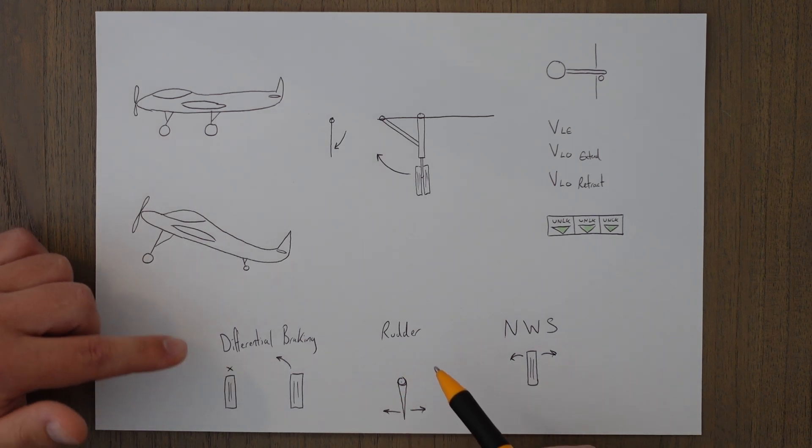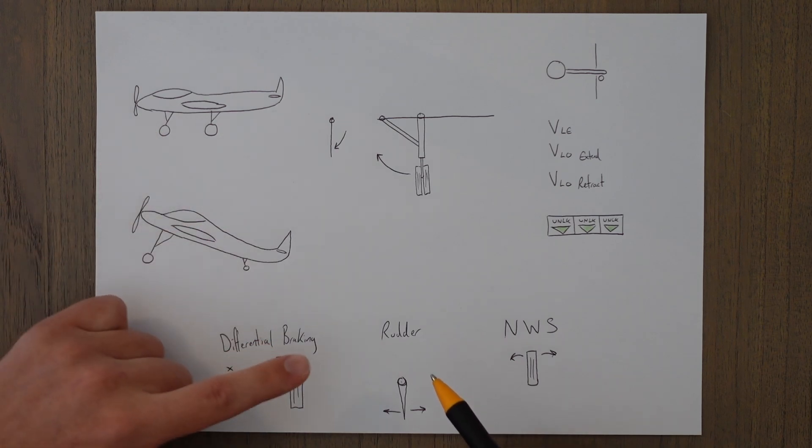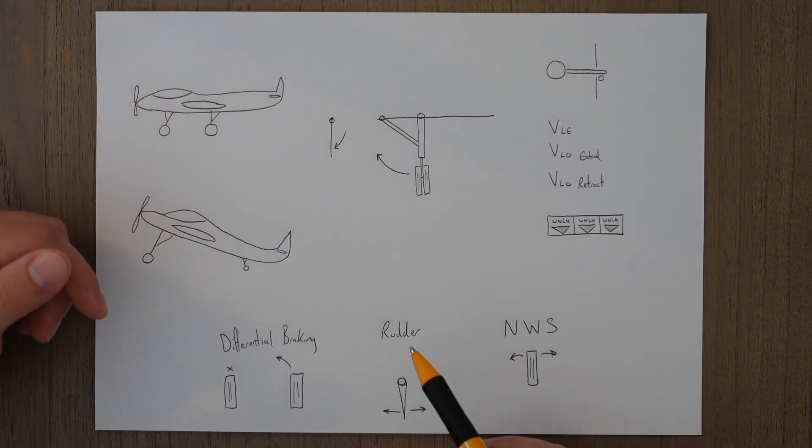On a tricycle small aircraft, you'll have both these methods, but you'll often have a nose wheel steering that is mechanically linked to the rudder, so when we deflect the rudder, the nose wheel also turns a bit and helps us turn those tight corners.